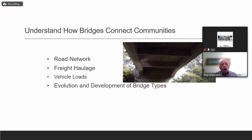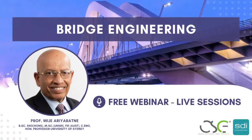Bridges connect communities. To understand that, we must understand the road network because bridges link the roads. You can have kilometers and kilometers of road, but without one little bridge, that whole road network cannot be fully used. Bridges are a very vital component of the road network. We also need to understand freight haulage — how trucks have become bigger and bigger — and the different types of vehicle loads, as well as the evolution and development of bridge types.